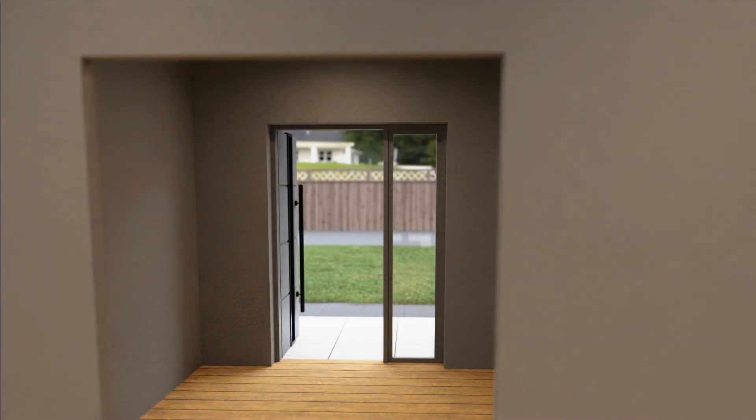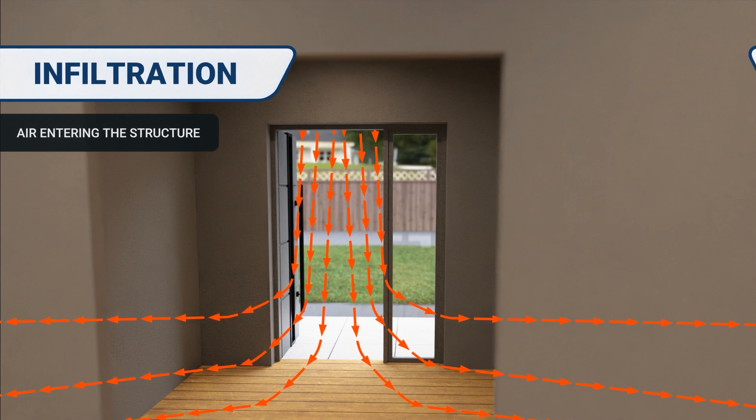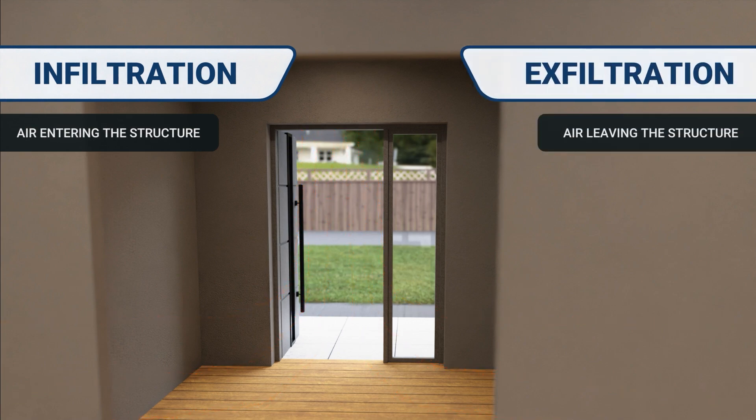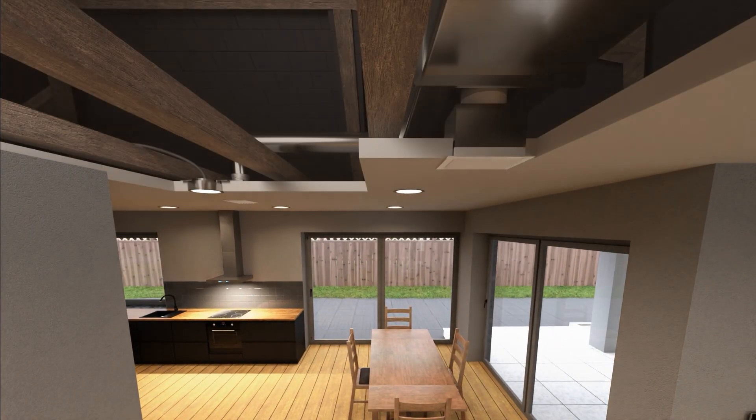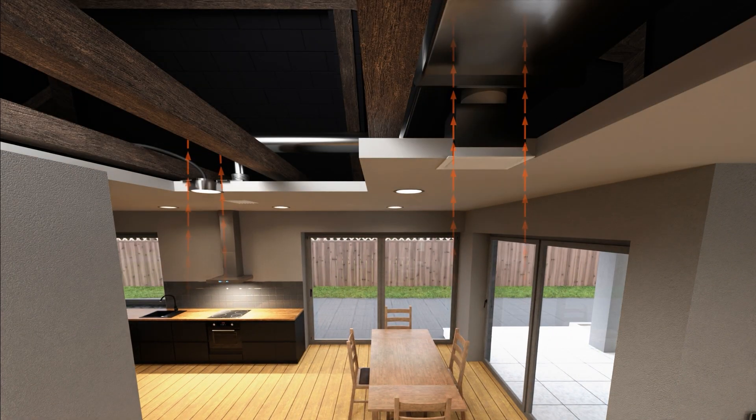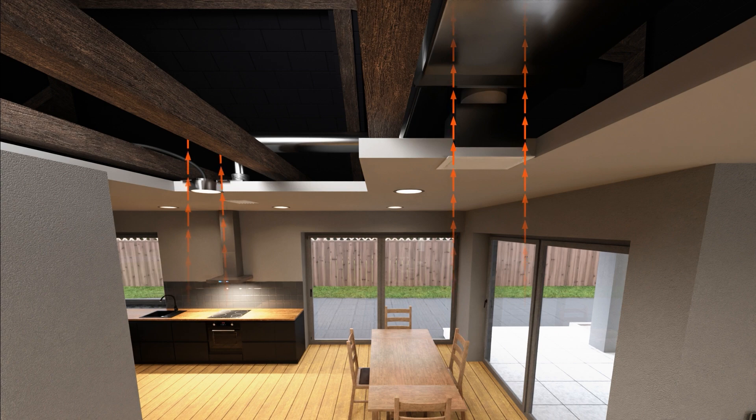Anytime air is leaving or entering a home, we're either gaining or losing heat via convection. We call this infiltration, when air comes in, or exfiltration, when air leaves. Some other common areas in which we can lose or gain heat via convection are around things like lights or attic vents.